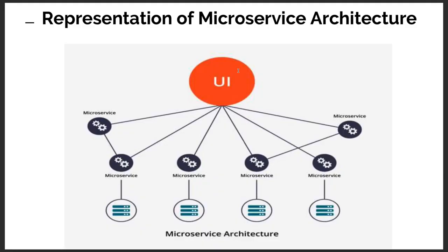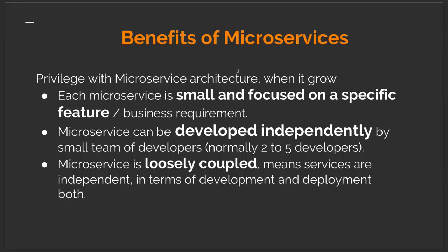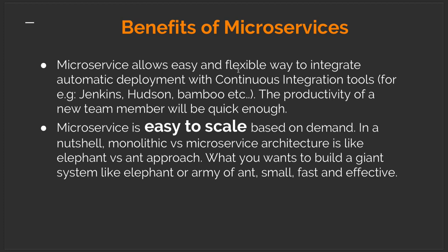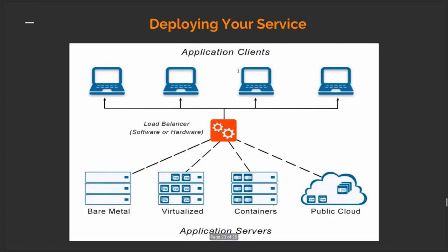In a microservice architecture, different microservices talk to their own databases and expose data, while the UI accesses data from different microservices. Each microservice is small and focused on a specific feature. Microservices can be deployed independently and add loose coupling between all developed services. They are easy to scale — you can create multiple pods in Kubernetes, increase EC2 instances, or increase Docker containers in ECS for a particular service, which is vertical scaling by increasing instances rather than the infra of a single instance.